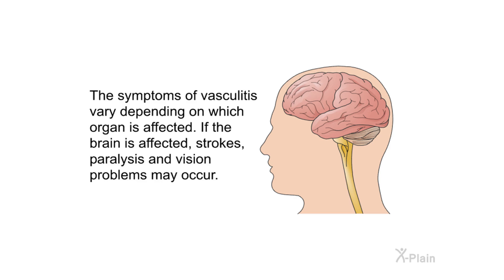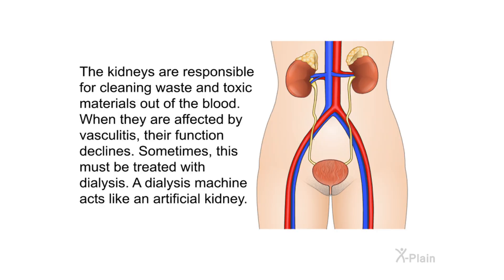The symptoms of vasculitis vary depending on which organ is affected. If the brain is affected, strokes, paralysis, and vision problems may occur. The kidneys are responsible for cleaning waste and toxic materials out of the blood. When they are affected by vasculitis, their function declines. Sometimes this must be treated with dialysis — a dialysis machine acts like an artificial kidney.